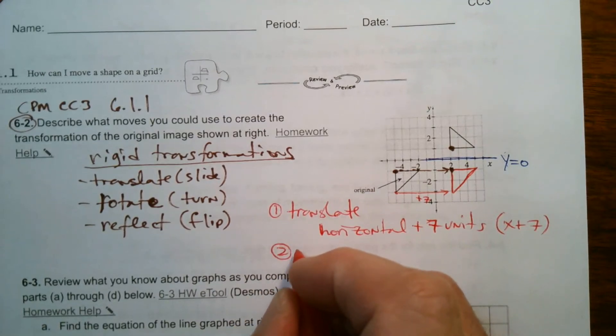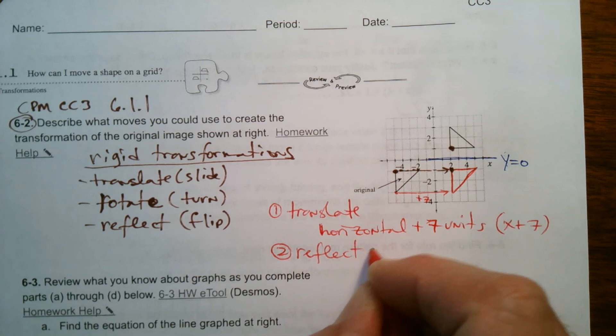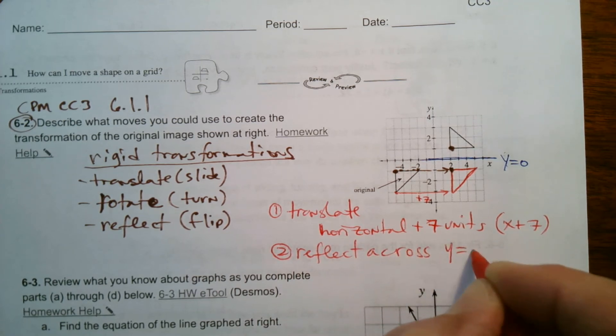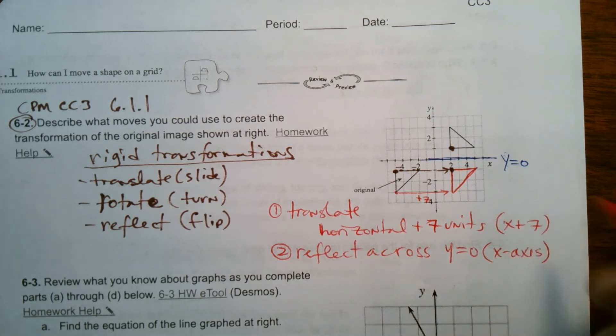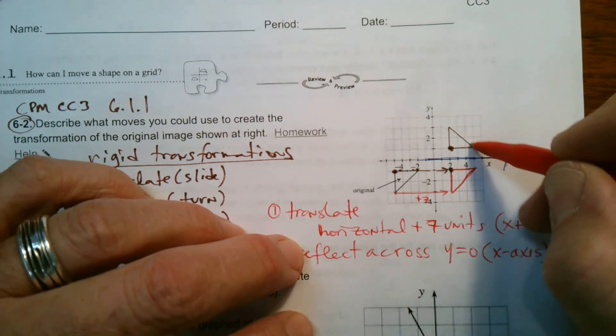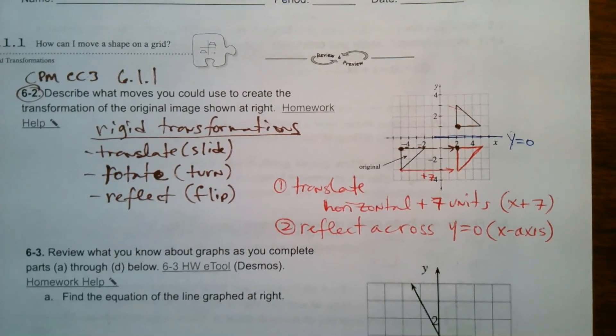So second move would be a reflection, reflect across Y equals zero, or you can say X axis, reflect across the X axis. And that's how we would get to be there. All right. There we go.